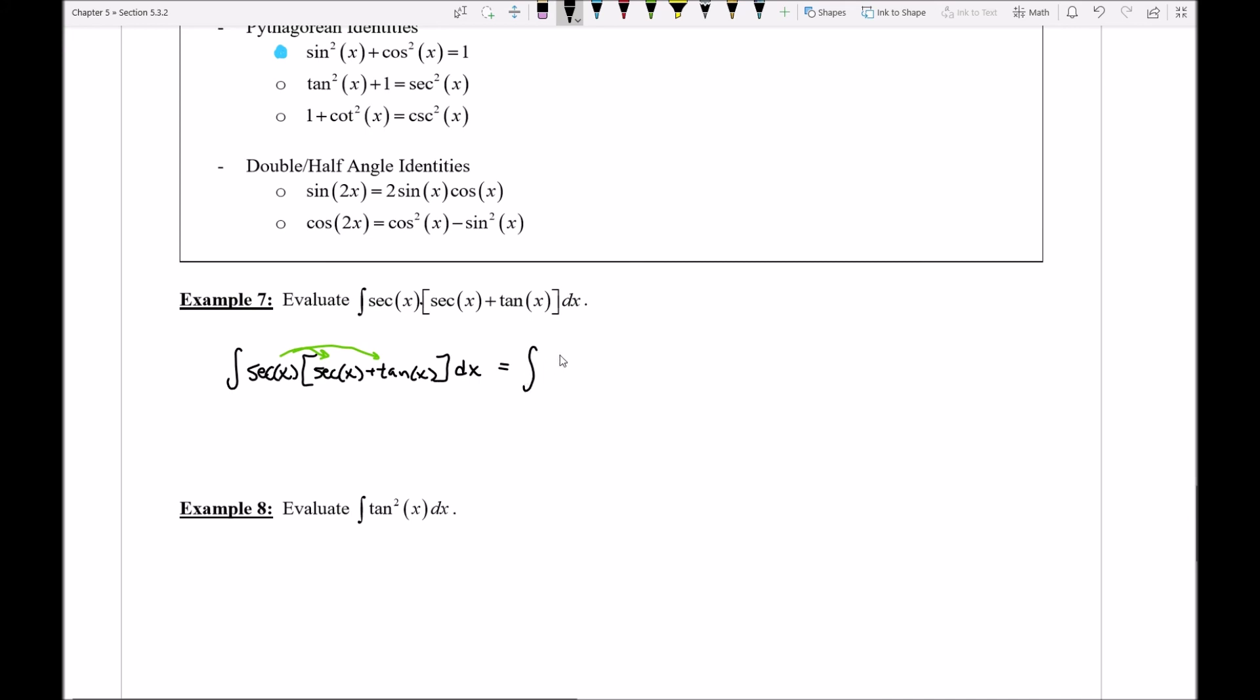Now if I was to go ahead and do this, notice that I would end up with a secant squared of x plus a secant of x tangent of x.